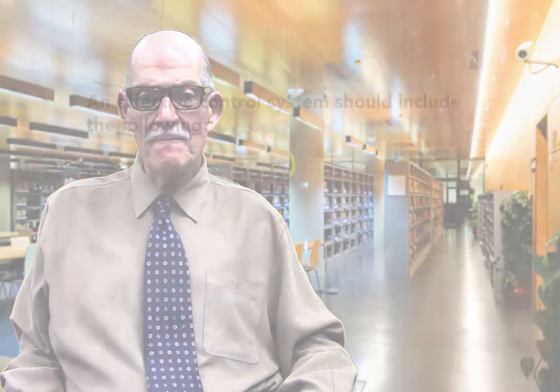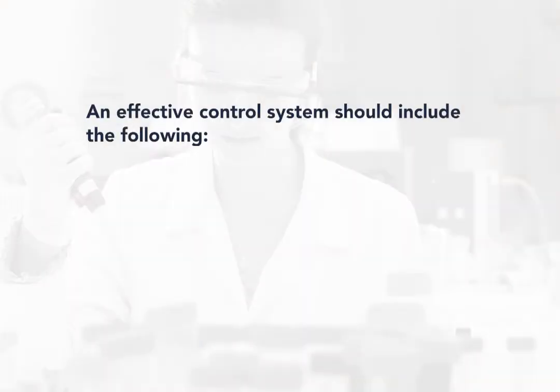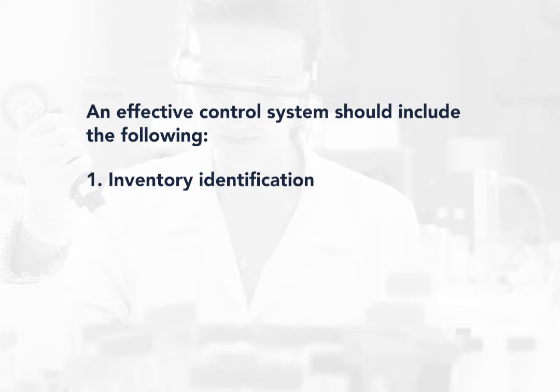An effective control system should include the following. An inventory identification procedure, where each item is identified with a basic description, which includes the vendor name and other important details such as lot number and expiration date.